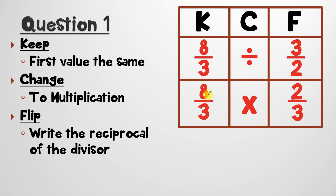Now that we have this set up, all we have to do is multiply straight across. We've got eight times two, which is sixteen — that's going to be the numerator for my answer. And then we've got three times three, which is nine. So our answer is sixteen over nine.